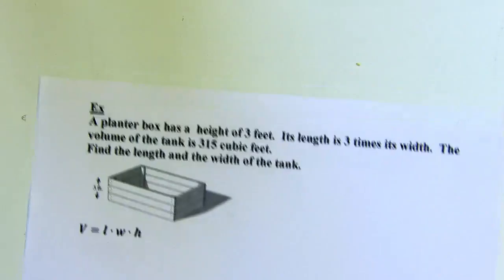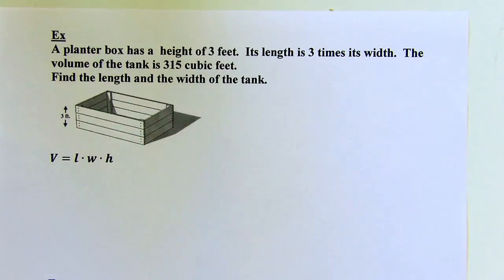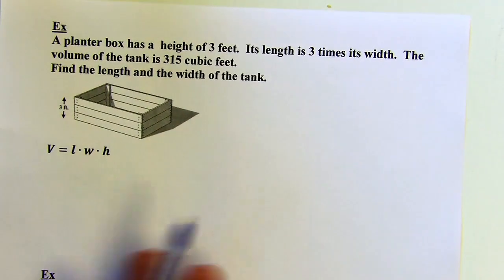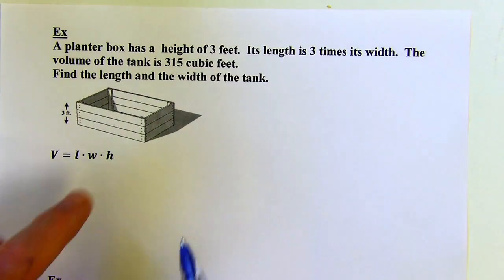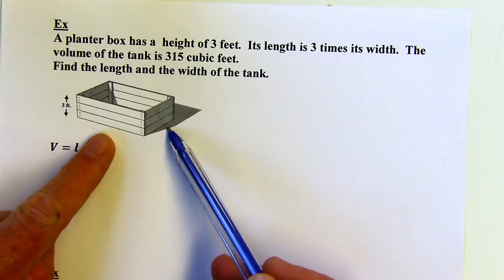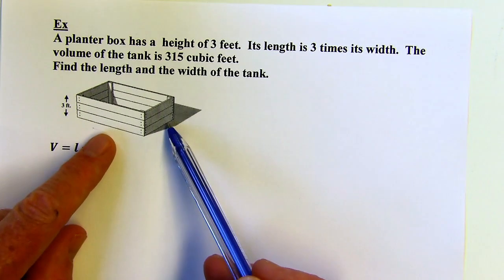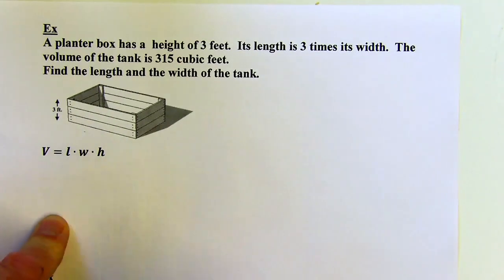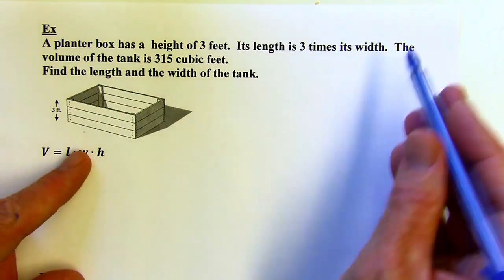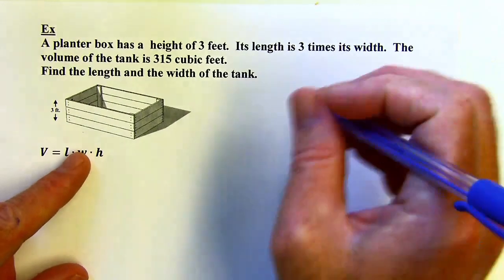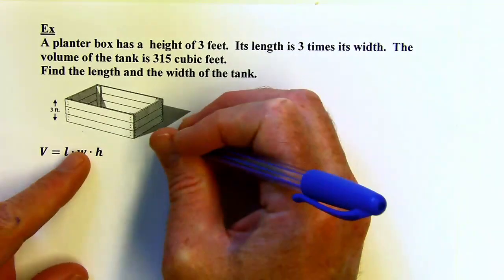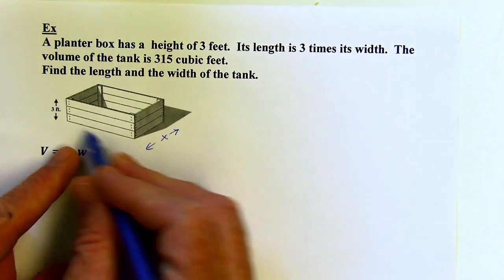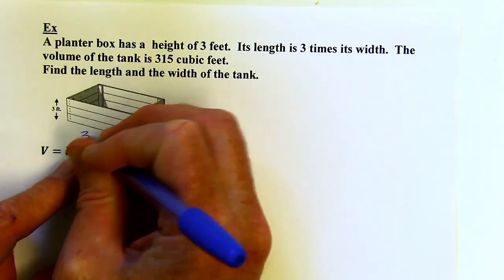Let's look at some applications — word problems. We have a planter box with a height of 3 feet. Its length is 3 times its width. Since the length is 3 times the width, I'll let the width be x. If the width is x, then the length is 3x.